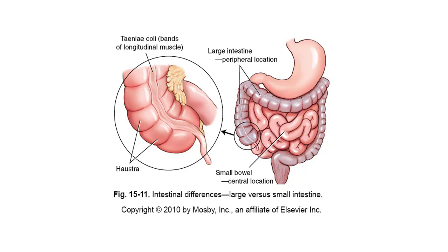The pouch-like portion inferior to the junction of the ileum and the colon is called the cecum. Also part of the large intestine is the vermiform appendix, which is attached to the posterior medial side of the cecum.